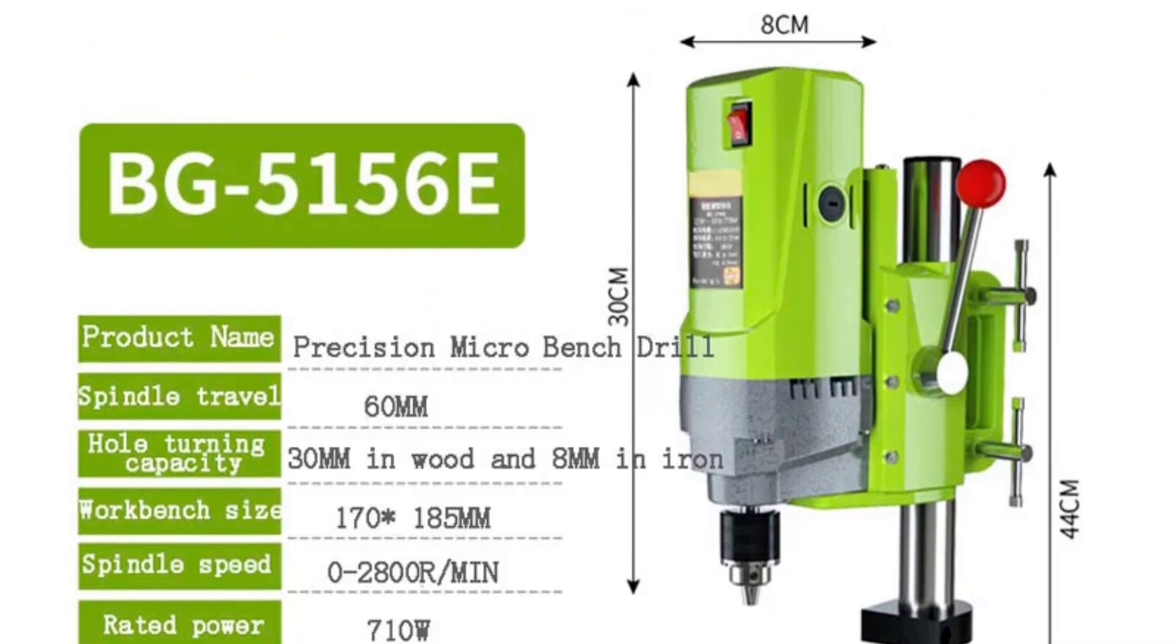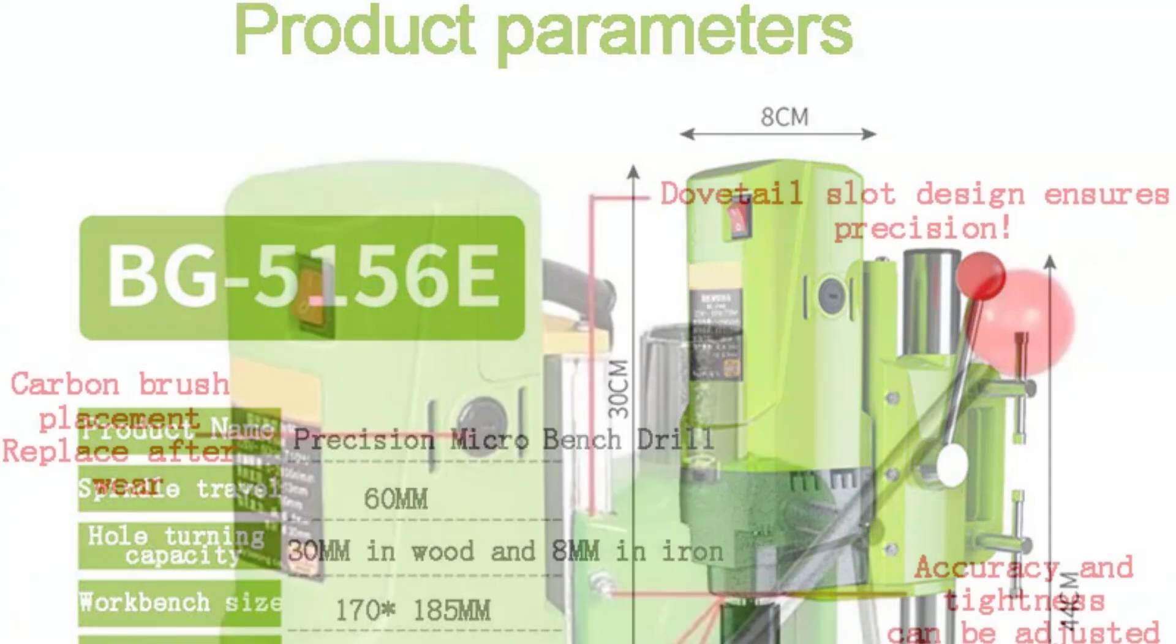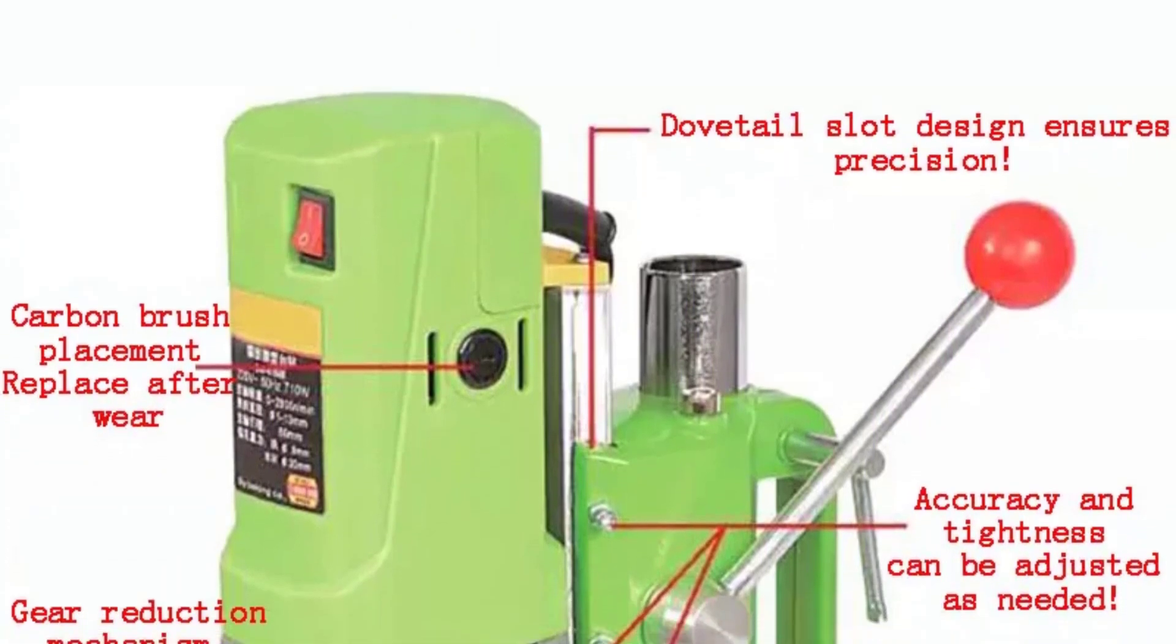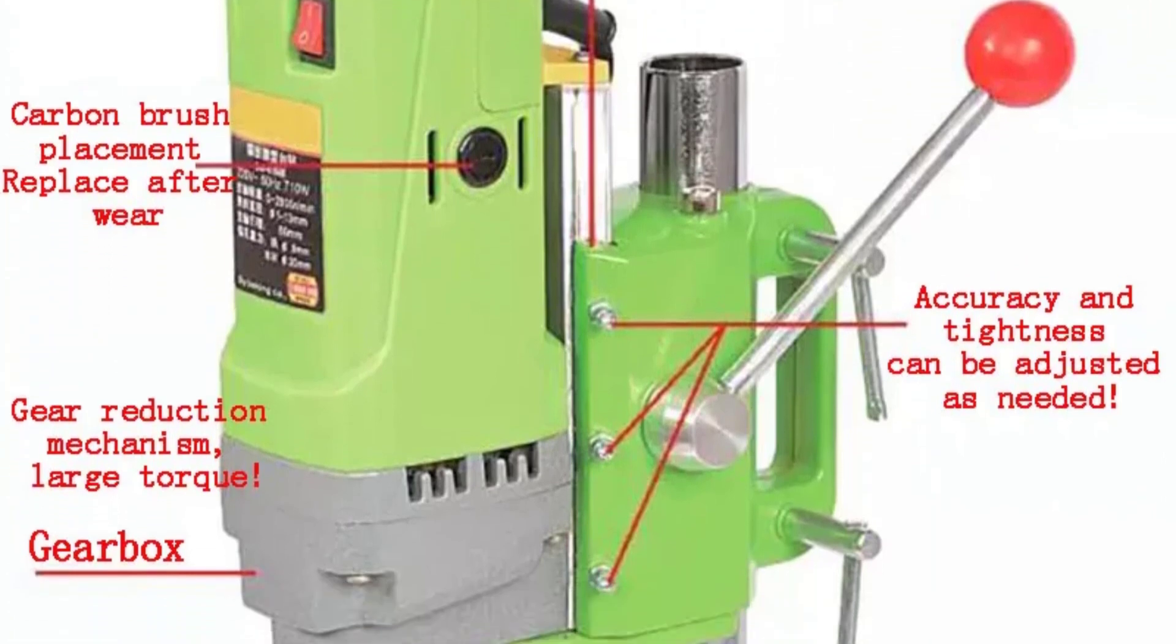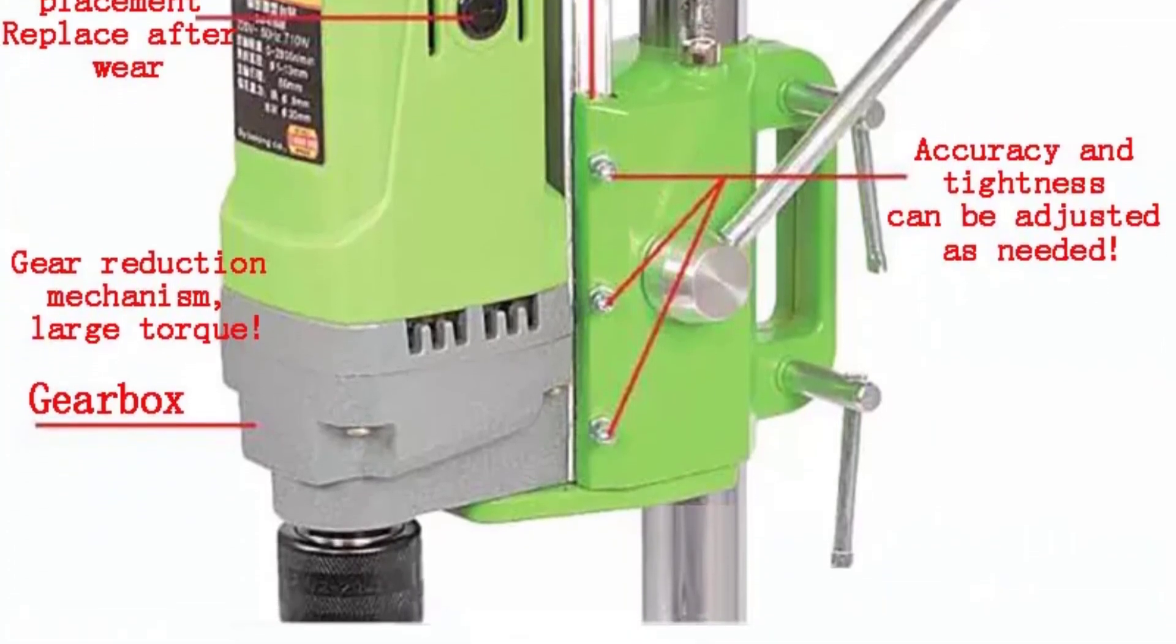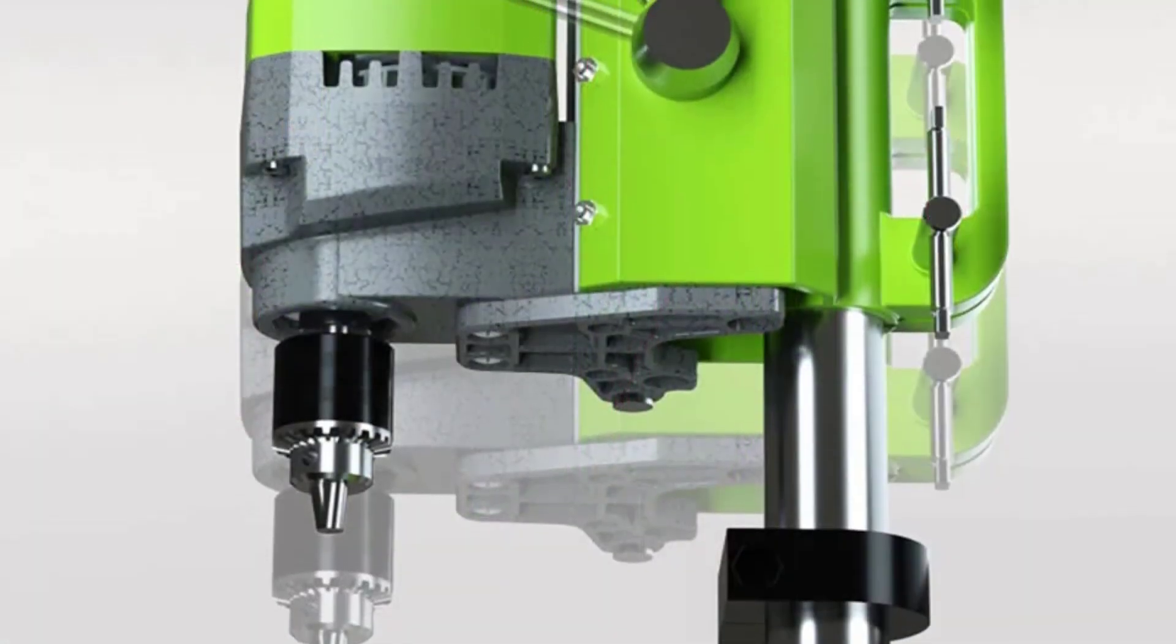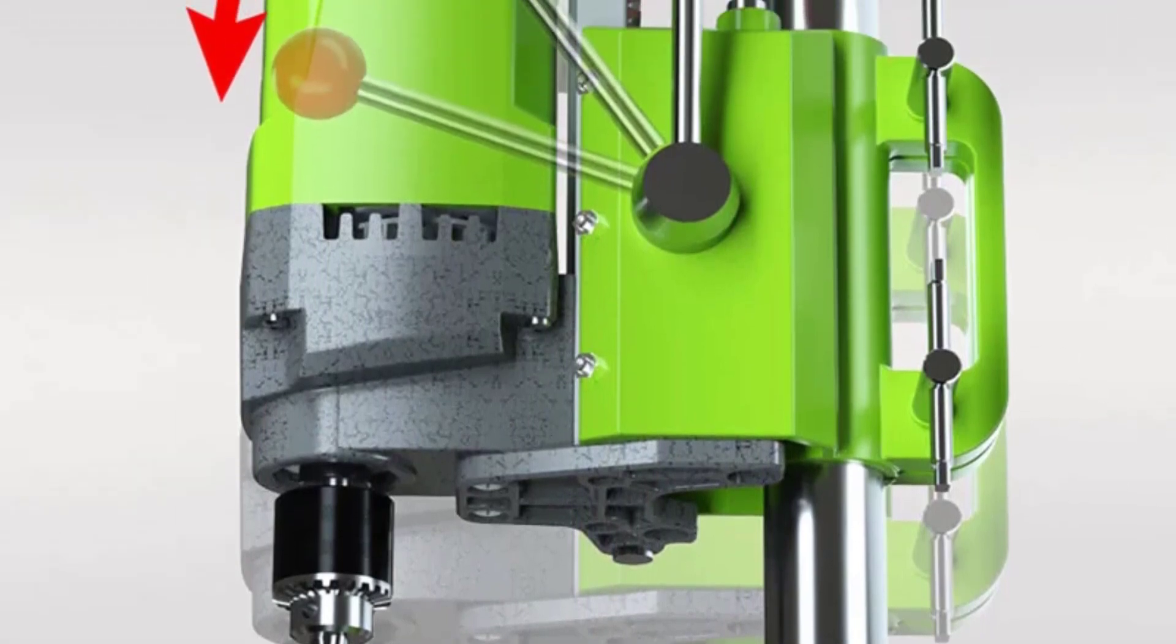Equipped with a brushless motor, the XMS-JMNTZ delivers outstanding performance. The 710W rated input power provides ample strength for both woodworking and metalworking applications. The no-load speed of 2,800 RPM ensures efficient drilling, and the brushless motor design adds to the machine's longevity while keeping maintenance requirements to a minimum.